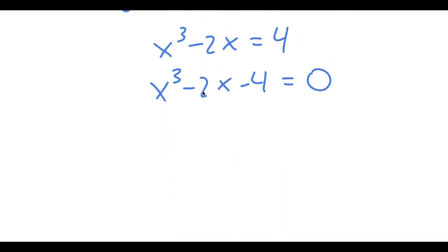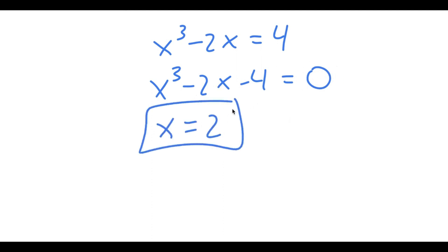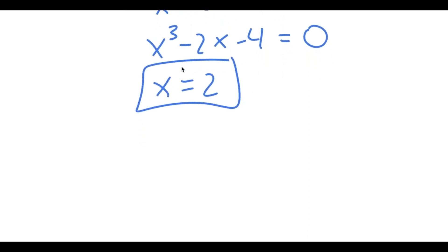We keep plugging in numbers until we find a solution. If you plug in 2, you get that the expression equals 0, so x equals 2 is one solution. Using this solution, we can find the rest of the solutions by doing long division.